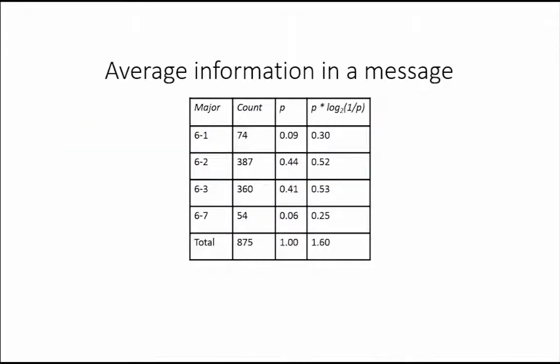We now add one more column to our table, which gives p times log base 2 of 1 over p for each of the majors. Using this information, we can calculate the entropy, which is the average amount of information contained in each message. This is calculated by taking the sum of p times log base 2 of 1 over p for all choices of majors. For this problem, the entropy is 1.6.